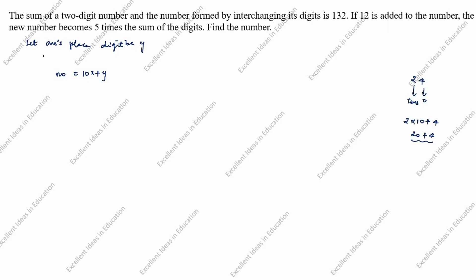You can see the ones place is y and the tens place digit is x. The number formed by interchanging the digits is 10y plus x — y goes to the tens place and x comes to the ones side.